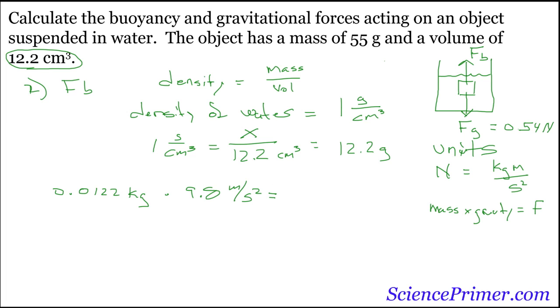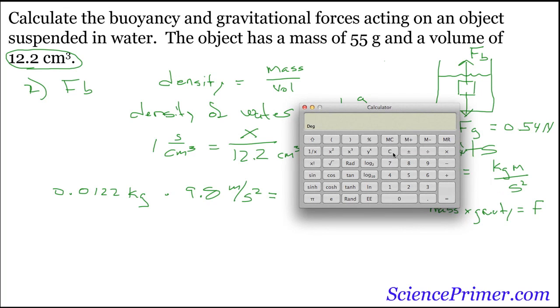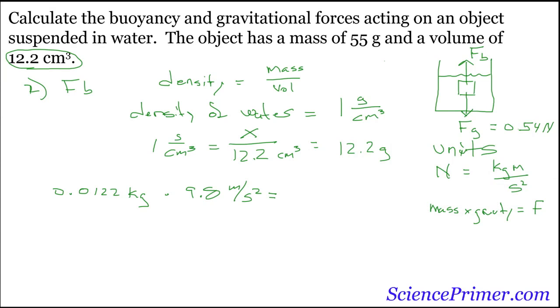Pull the calculator in again to do this one. Clear the old value. So we have 0.0122 times 9.8, and that's going to give us the answer of 0.12. So the buoyancy force is 0.12 kilograms meters per second squared, or Newtons. Now we can jump over to here and put that 0.12 Newtons.